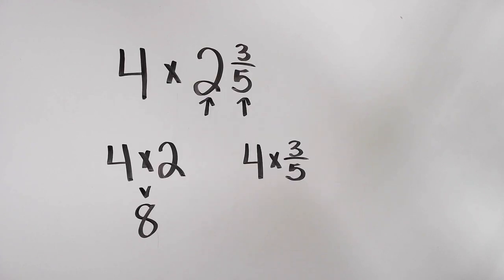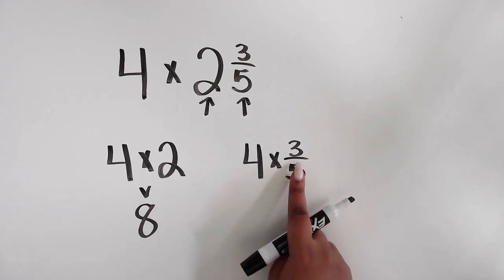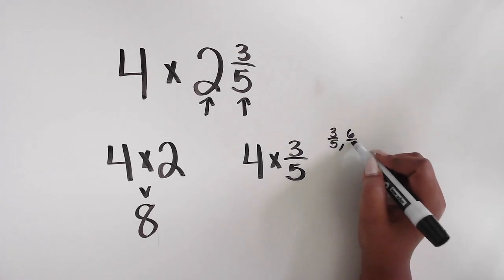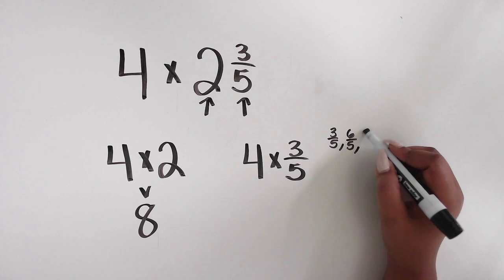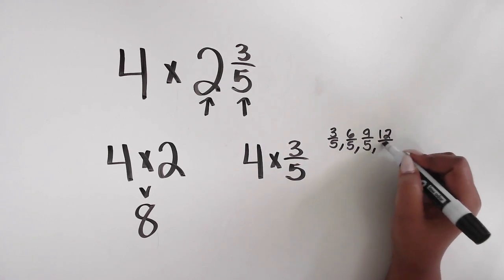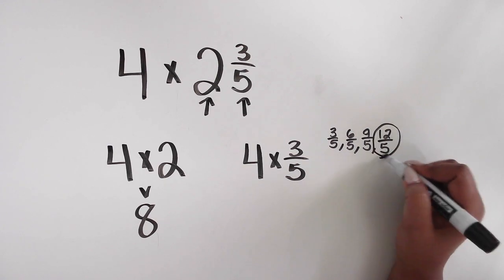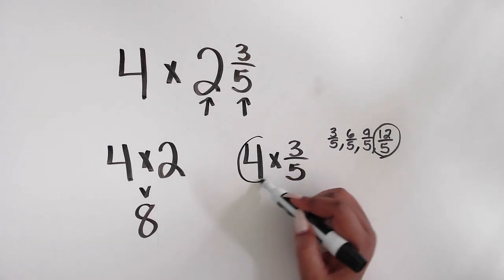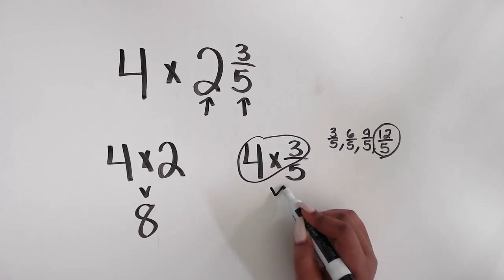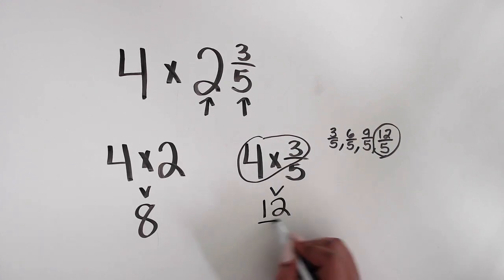Let's review how to do that. One way is to guide your students towards making the connection to repeated addition or equal groups. With 4 times 3 fifths, we can skip count the 3 fifths four times: 3 fifths, 6 fifths, 9 fifths, 12 fifths. Or many students may know the math fact of 4 times 3 equals 12 right away by multiplying the whole number by the numerator, then connecting it back to 12 fifths.